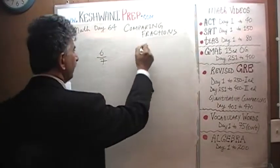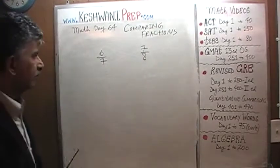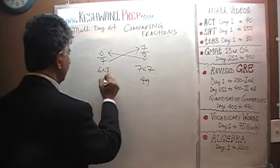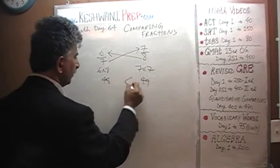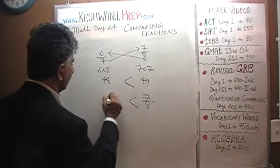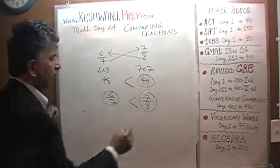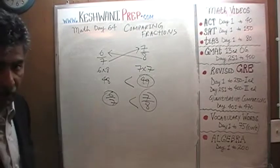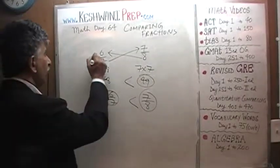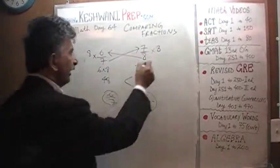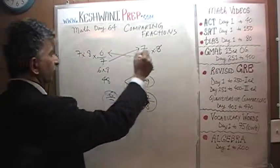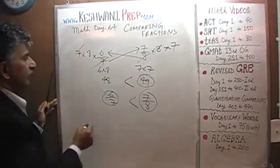6/7 versus 7/8. Now that we know the process, it only takes 10 seconds: 7 times 7 is 49, and 6 times 8 is 48. Since 48 is smaller than 49, therefore 7/8 is greater than 6/7. Remember, we found 49 on the right side because we're multiplying both fractions by 8 — so the 8 disappears from that side — and we're multiplying both columns by 7, so that 7 disappears and reappears on the other side.